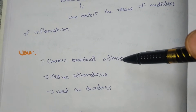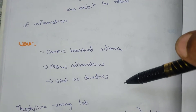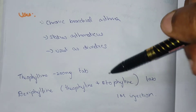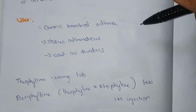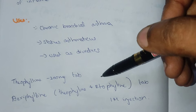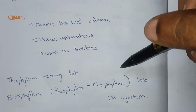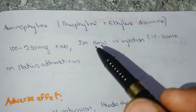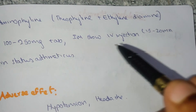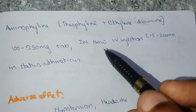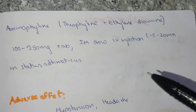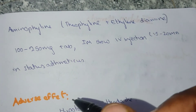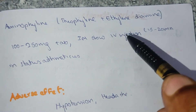The uses are chronic bronchial asthma, status asthmaticus, and it is also used as a diuretic. Theophylline is available as a 200 mg tablet. Another form is dyphylline, which is theophylline plus etophylline, available as tablet and intramuscular injection. Aminophylline is theophylline plus ethylenediamine, available as 100 to 250 mg tablet, IM, and slow IV injection, with 15 to 20 mg used in status asthmaticus.